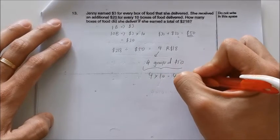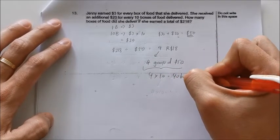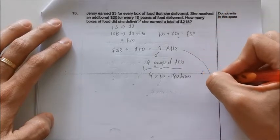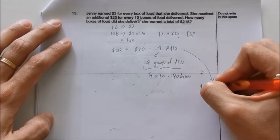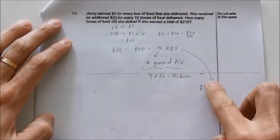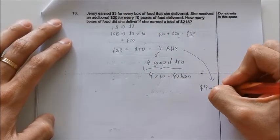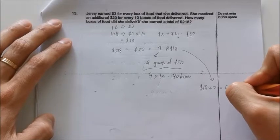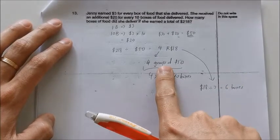And this remaining $18, you can see that it will go into the individual $3 per box. So $18 divided by $3, I get 6 boxes.